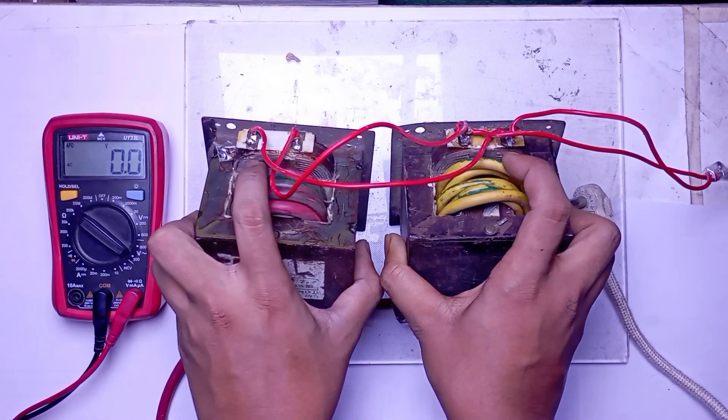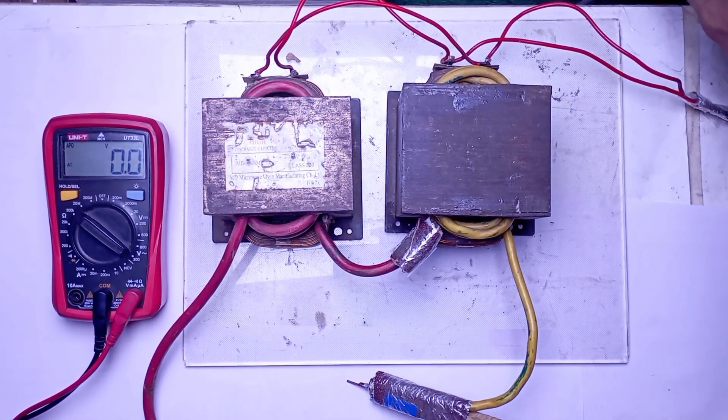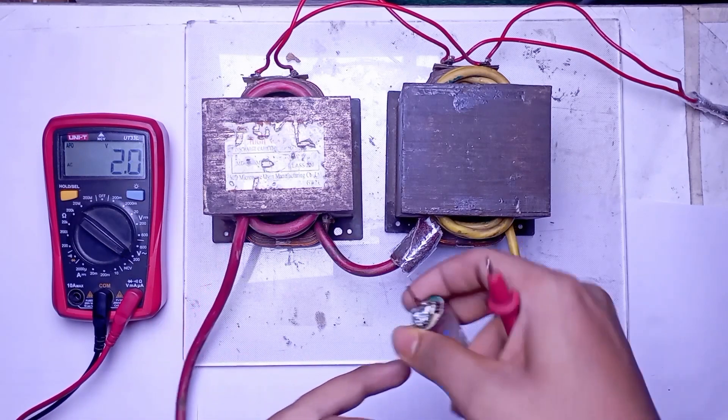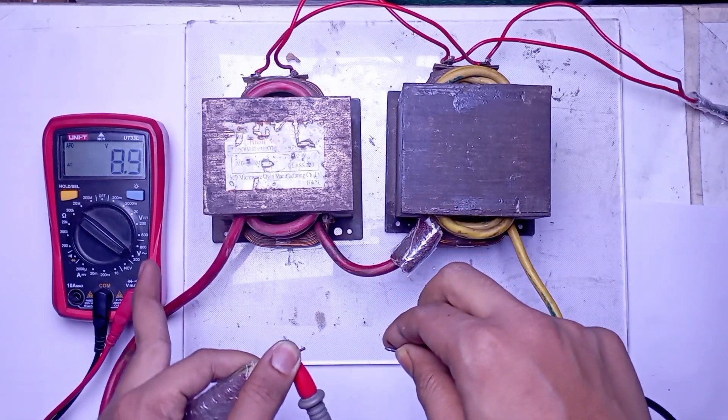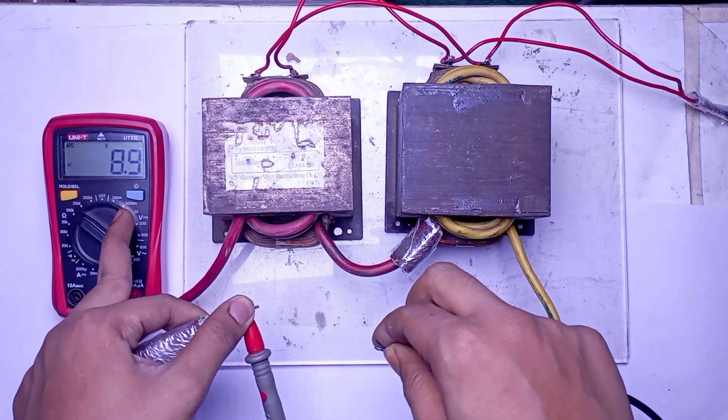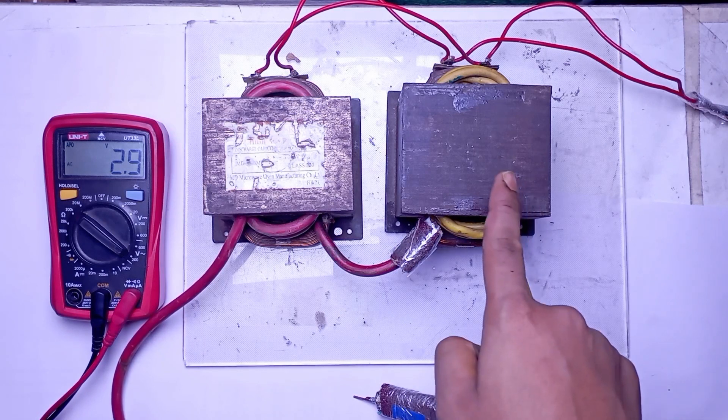We should test the transformer before connecting it to the timer unit. The output is 8.9 volts, so each transformer is producing a bit more than 4 volts.